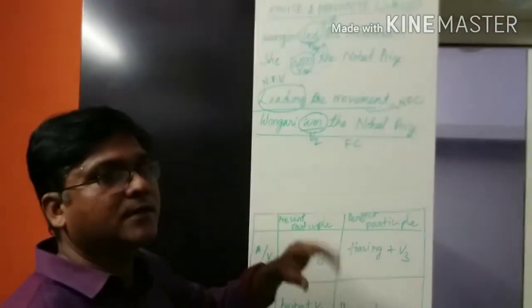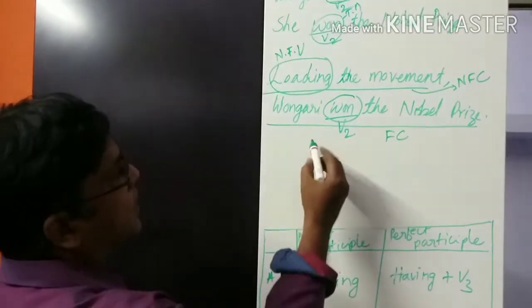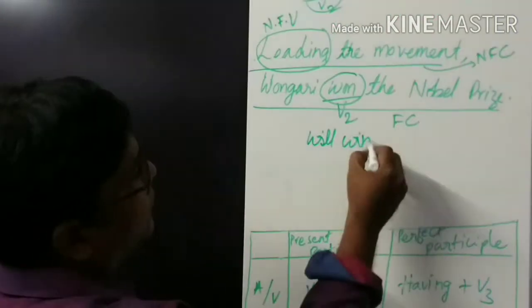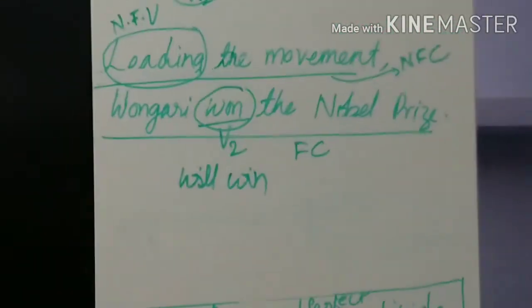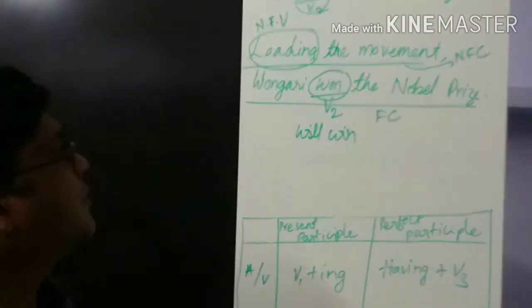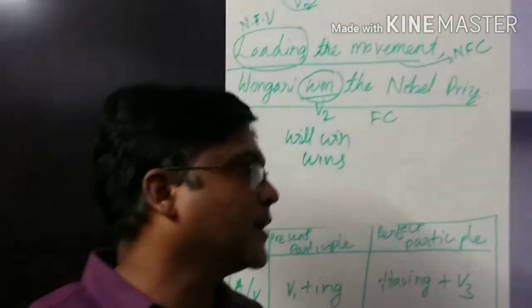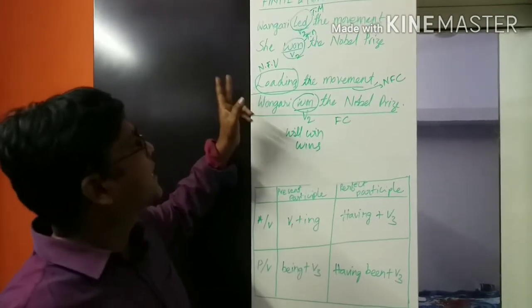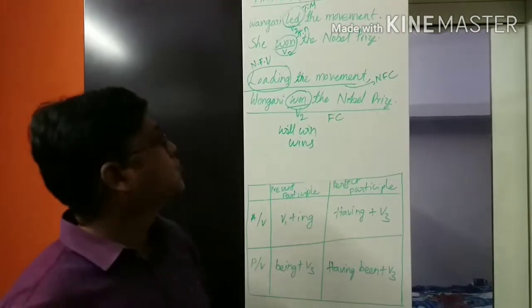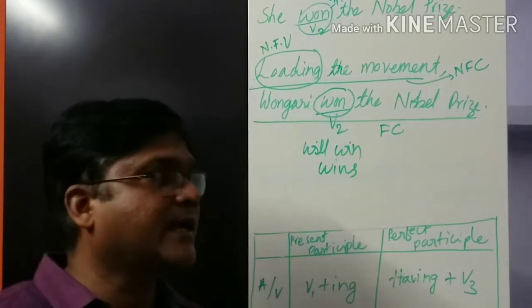Suppose we write this sentence in future tense: 'Leading the movement, Wangari will win the Nobel Prize.' The sentence is now simple future. We can make it in simple present also: 'Leading the movement, Wangari wins the Nobel Prize.' So the non-finite clause depends on the finite clause to identify which tense it belongs to.